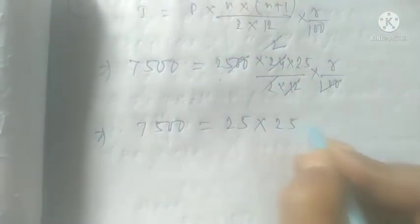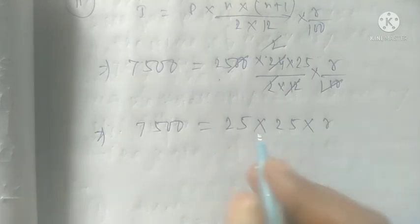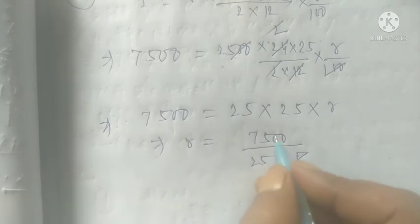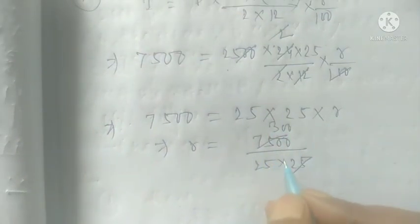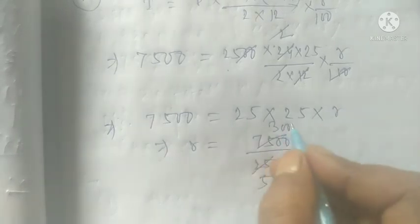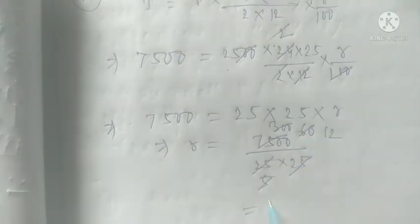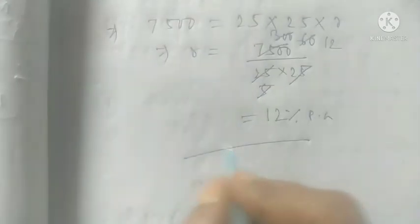Therefore R equals 7500 divided by (25 into 25), which is 7500 divided by 625. Divide 7500 by 25 to get 300, then 300 by 25 gives 12. So the rate of interest is 12% per annum. That is the answer for question number eight.